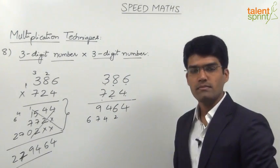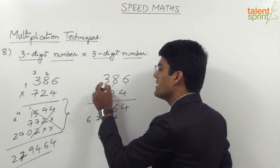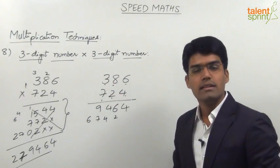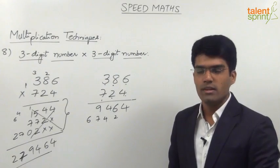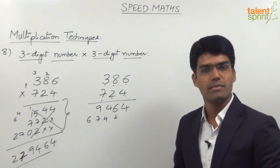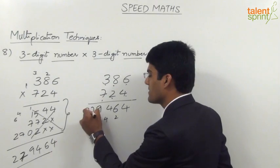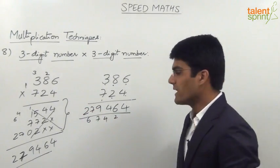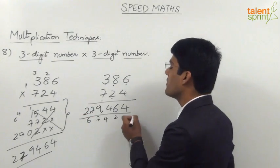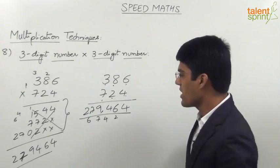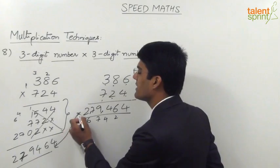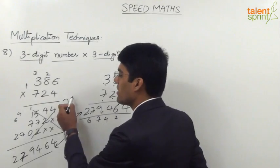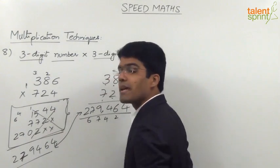The last step is multiplication of hundreds places: 3 into 7 is 21, and with 6 as the carry, 21 plus 6 is 27. So the final answer is 279,464. Comparing with the regular procedure, we got the same answer 279,464 — but we need not write all those intermediate steps.